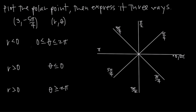Since we have increments of pi over 4, we start at the positive direction of the x-axis, but because we're going in the negative direction, we go clockwise: 1, 2, 3, 4, 5. We get to here — 3 pi over 4 is the same as negative 5 pi over 4. So that angle looks like this; that's the angle negative 5 pi over 4.